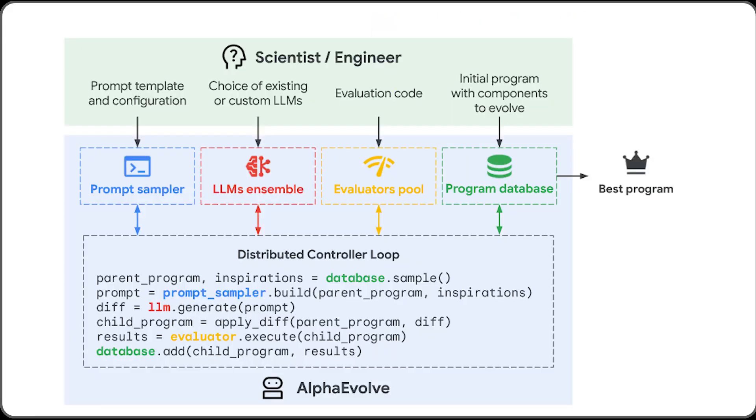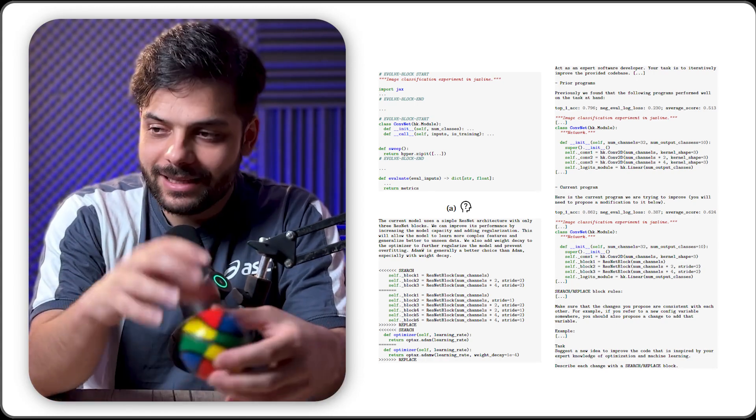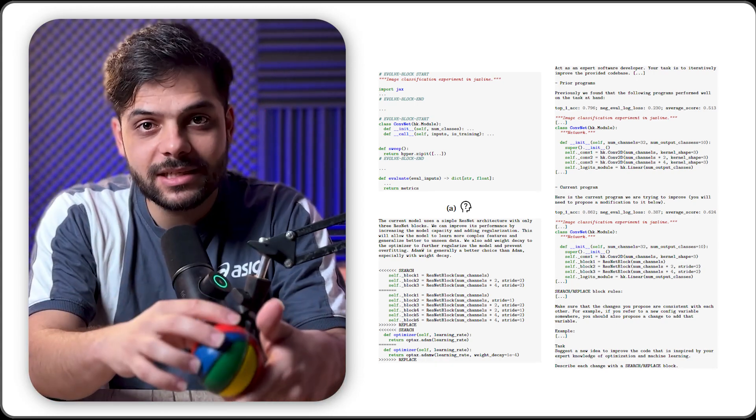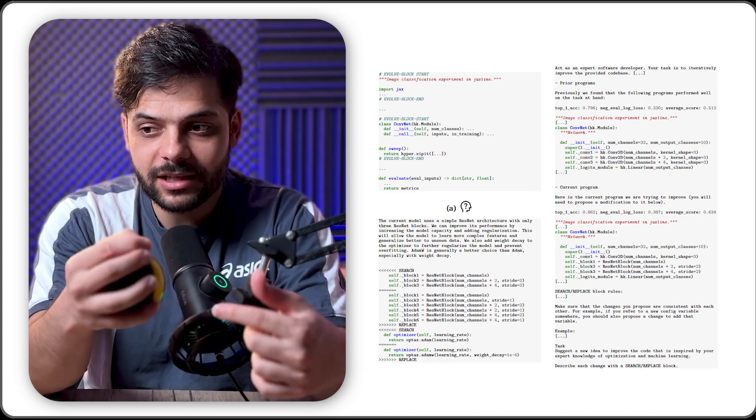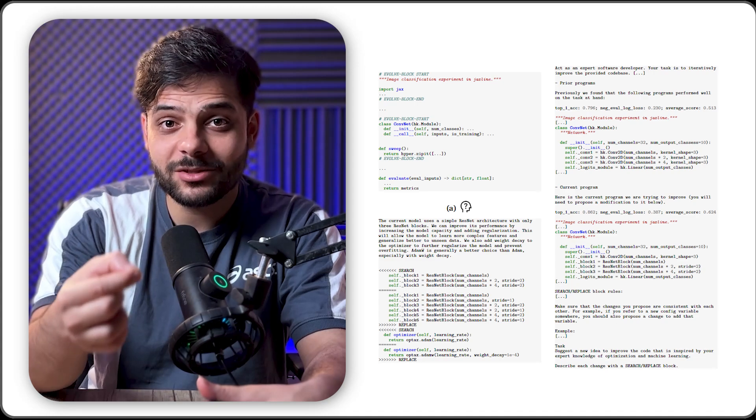The system has four main parts: the prompt sampler, the LLM ensemble, evaluator's pool, and program database. The prompt sampler is the researcher's request, what should be done. And the AI actually prompts engineers itself, so the researcher is kind of meta-prompting the AI. And the AI re-engineers the researcher's request to prompt itself.